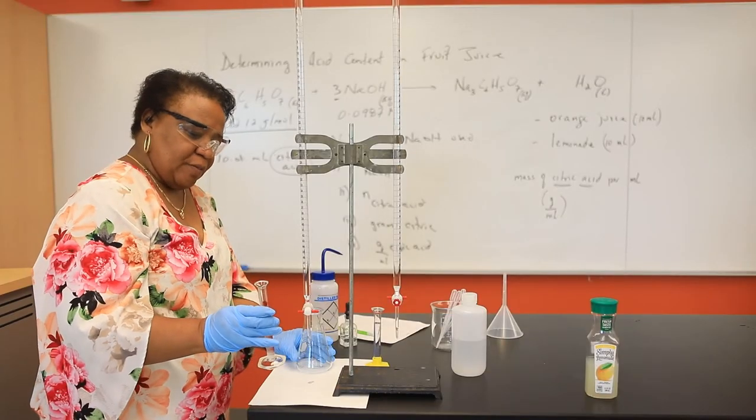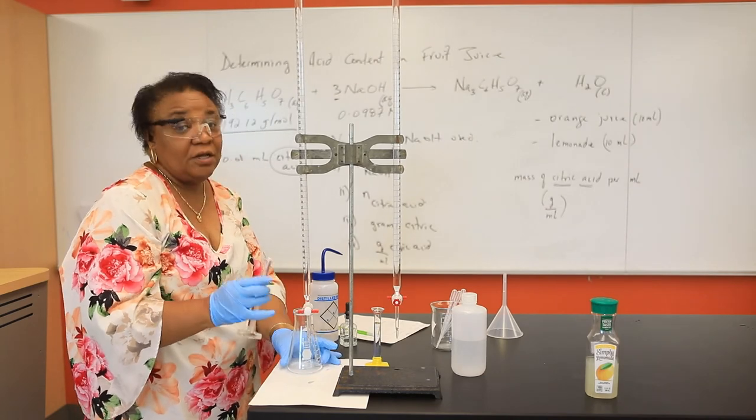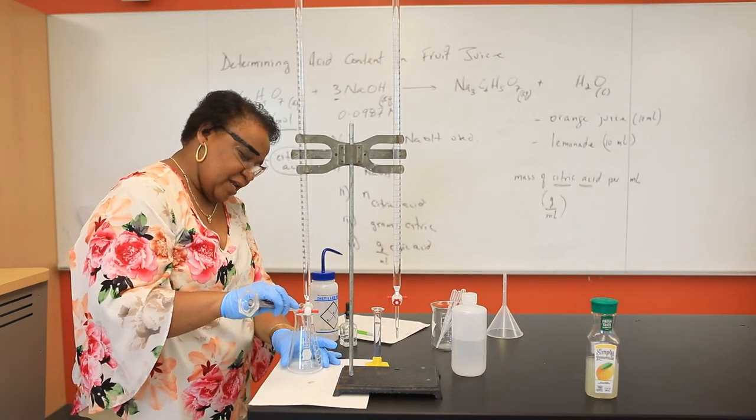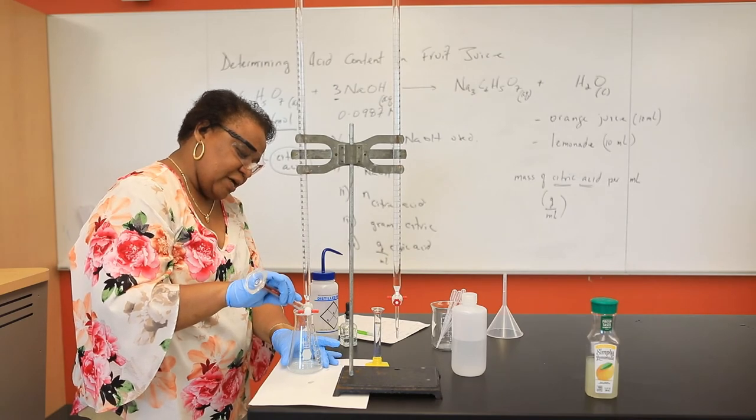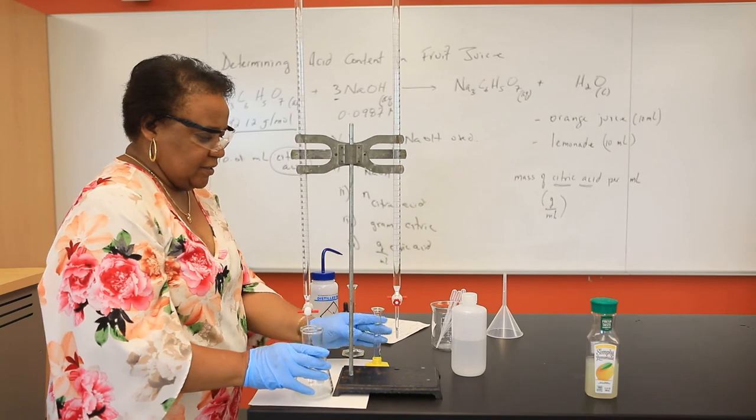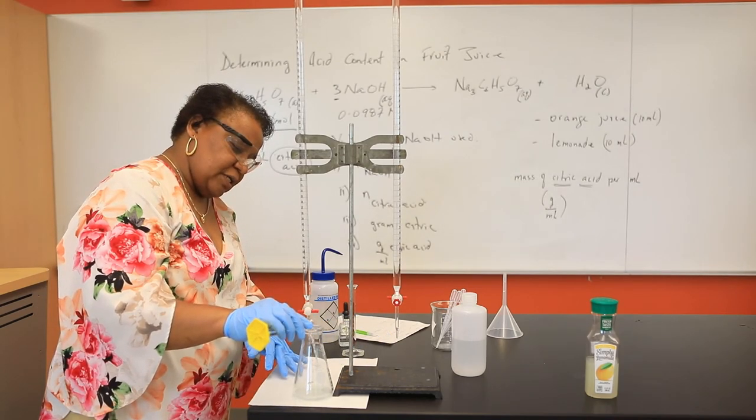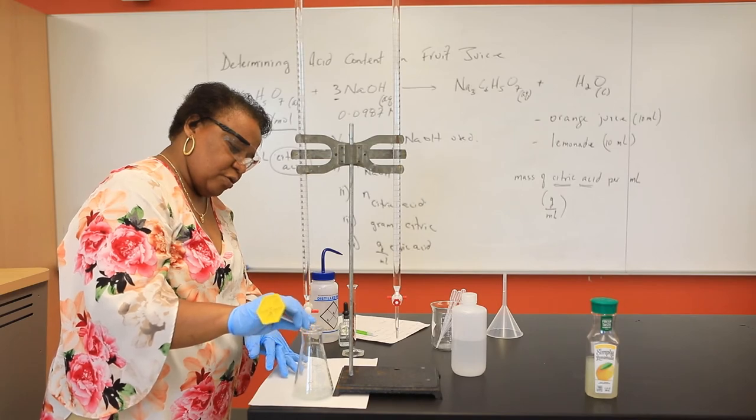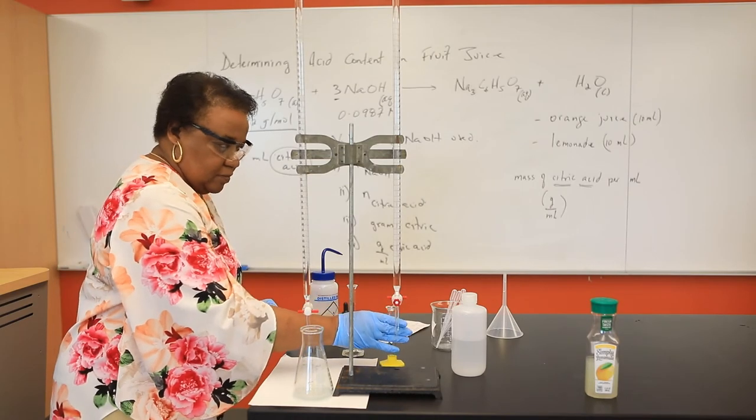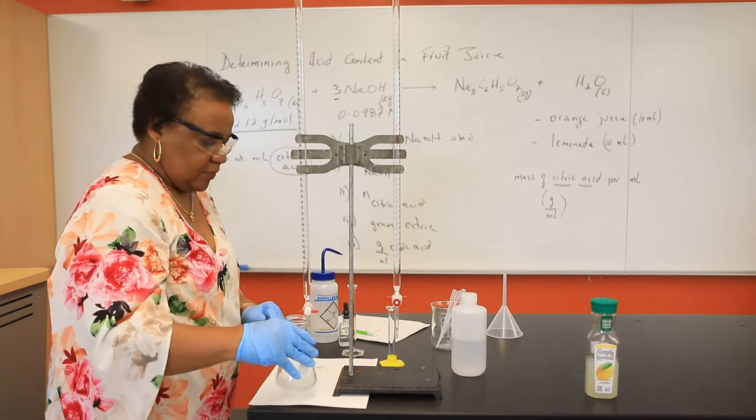The second part of the experiment, we're going to be looking at lemonade. I have pre-measured 10 mLs of lemonade. I've transferred it to my Erlenmeyer flask. And to that, I'm going to dilute my solution with 10 mLs of water.